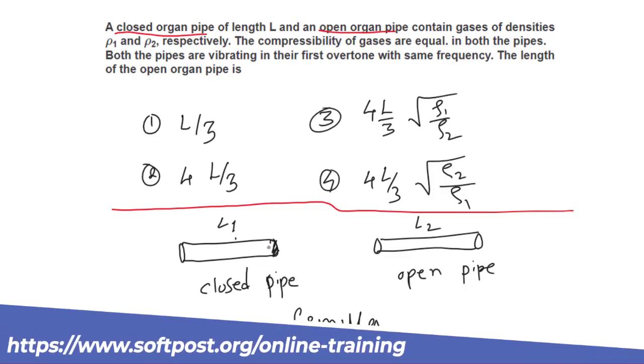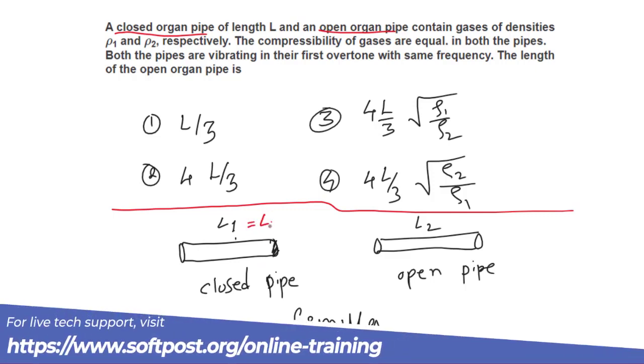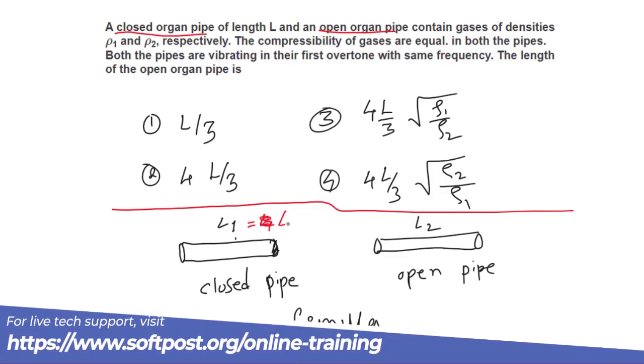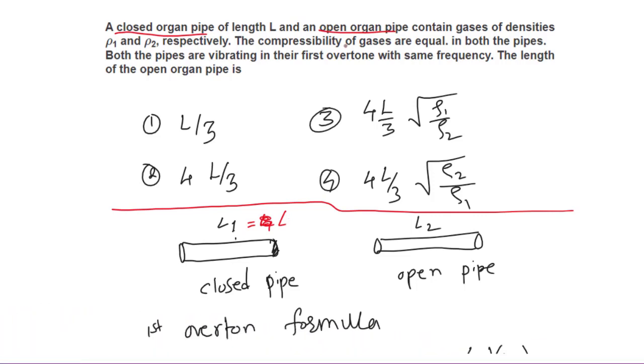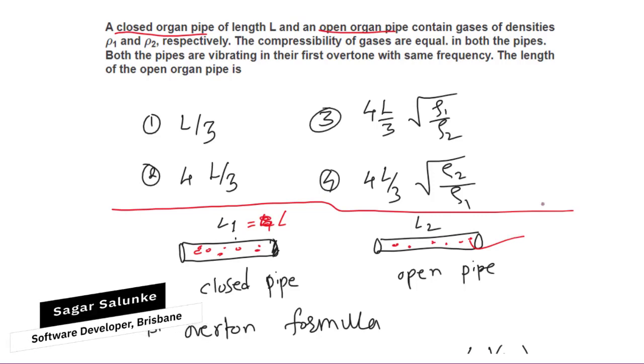The closed organ pipe has length L and the open organ pipe contains gases of densities ρ₁ and ρ₂. There is gas in these pipes and that gas density is given as ρ₁ and ρ₂. In the closed organ pipe it is ρ₁, in the open pipe it is ρ₂.